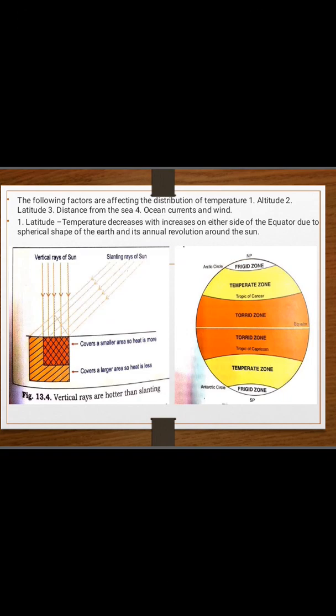The following factors are affecting the distribution of temperature. Number 1: Altitude. Number 2: Latitude. Number 3: Distance from the Sea. Number 4: Ocean Currents and Wind.